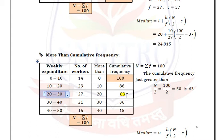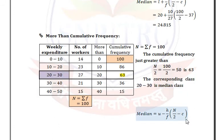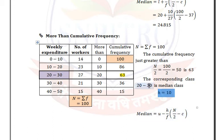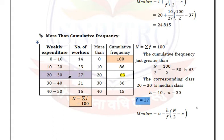Determine the class corresponding to cumulative frequency 63, which is 20 to 30. So the median class is 20 to 30. H = 10, and U (upper limit of the median class) = 30. The frequency of the median class is 27, so F = 27.